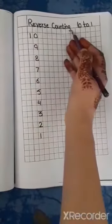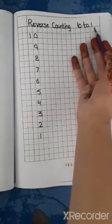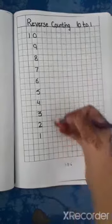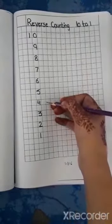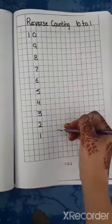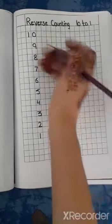Reverse Counting. From 10 to 1. Reverse Counting means ulti-ginti. Pahle हमने 1, 2, 3, 4 लिखा और पड़ा है. अब हम 10 से 1 तक लिखेंगे. Ulti-ginti. Reverse Counting.